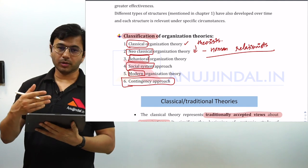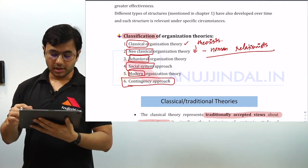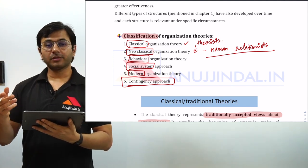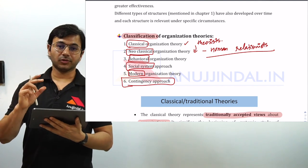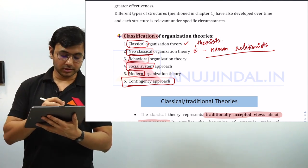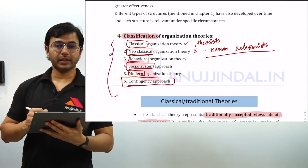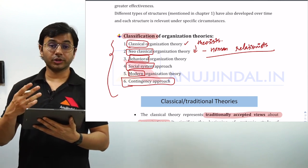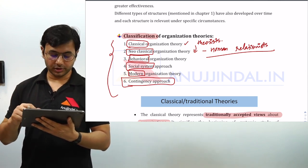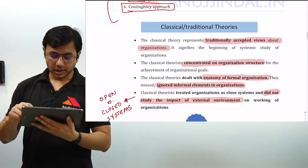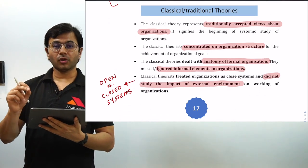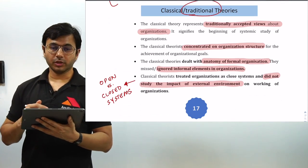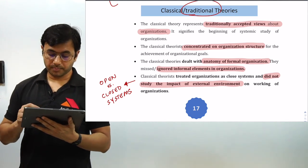Then we will move forward and talk about other theories and theorists as well. At the end of this lesson we will be discussing certain questions concerned with all these different kinds of classifications or theories or approaches given by various theorists. So let us start with the first one — classical, or popularly called as traditional theories, given by classical theorists.